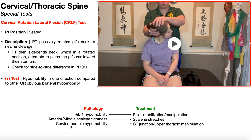The patient could also have cervicothoracic hypomobility — impaired range of motion, in particular between the C7 segment and T1. One treatment option for that, other than just simple active range of motion exercises, would be to perform a CT junction or upper thoracic manipulation, and again we're going to be covering that in later videos.